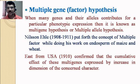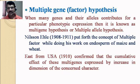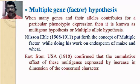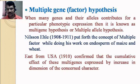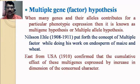Scientist Nelson Ill, from 1908 to 1911, put forth the concept of multiple factors while doing his work on the endosperm of maize and wheat. He started his work on maize and later found the same results in wheat plants. In the same period, East from the USA, in 1910, confirmed that the cumulative effect of these multiple genes is expressed by an increase in the dimension of the concerned character. Both Nelson Ill and East confirmed the multiple gene hypothesis.